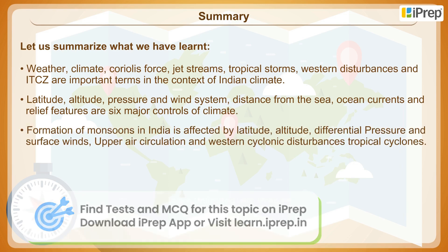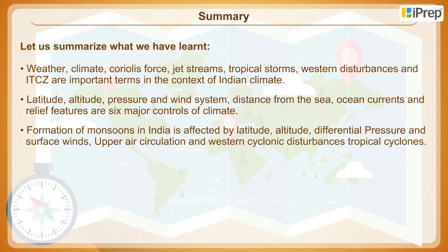Formation of monsoons in India is affected by latitude, altitude, differential pressure and surface winds, upper air circulation and western cyclonic disturbances, and tropical cyclones.